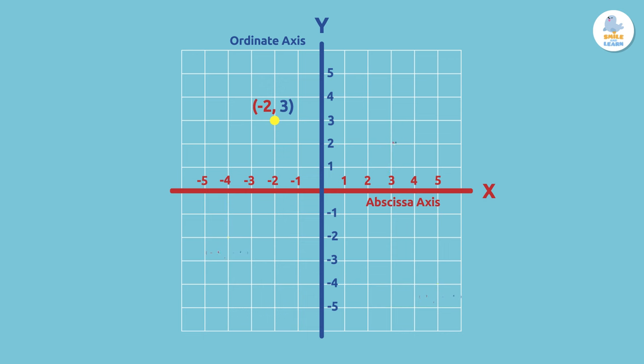Look at this example. The ordered pair is negative two, positive three. That means that we have to find negative two on the x-axis and three on the y-axis. The point is where these values intersect on the plane. Not too difficult, right?